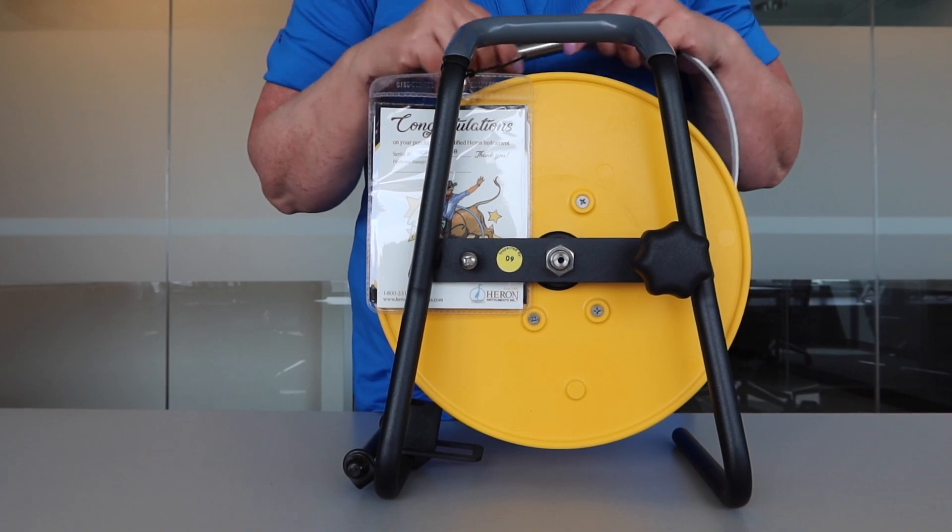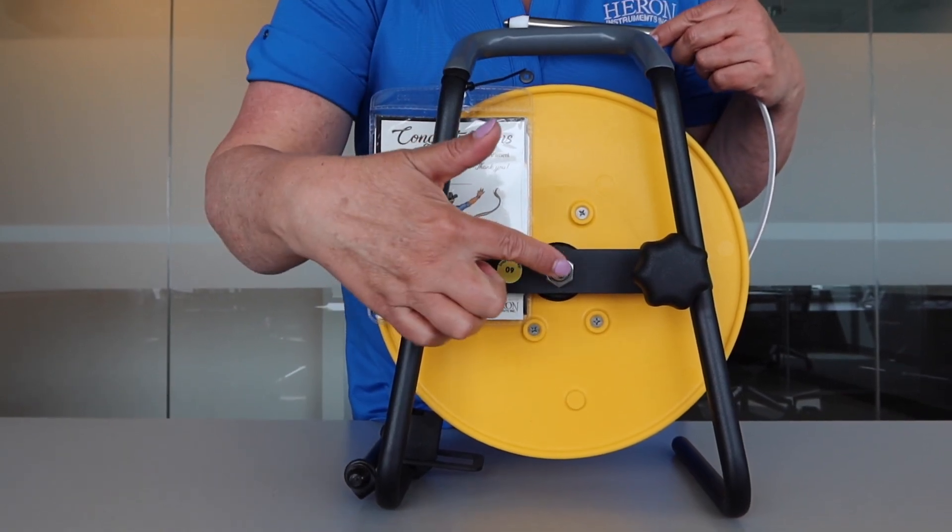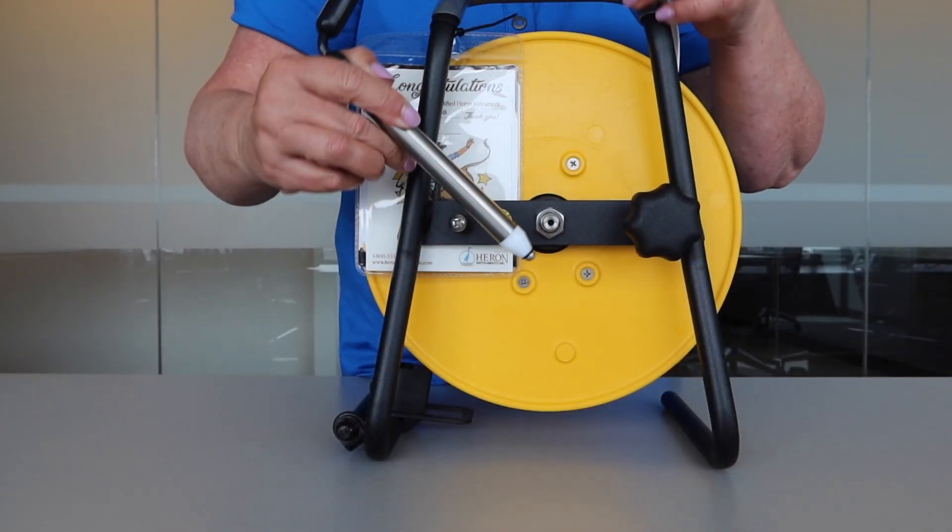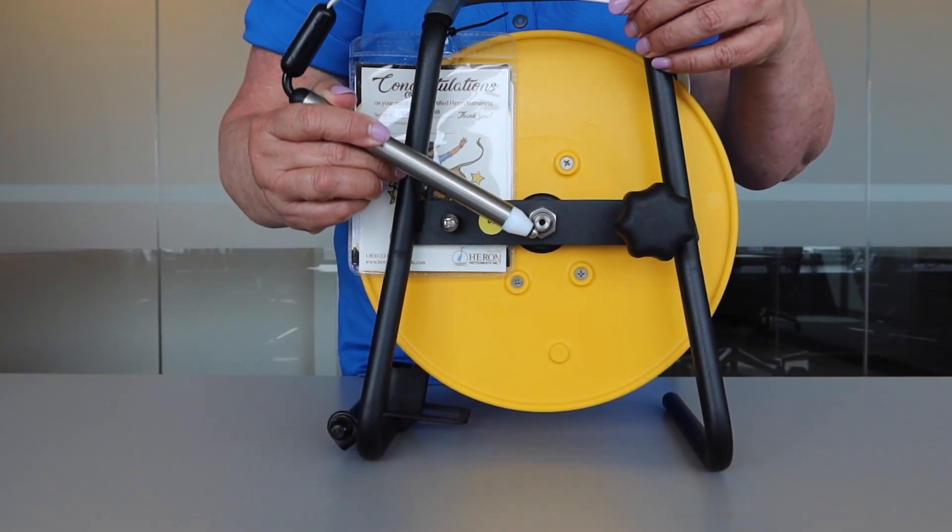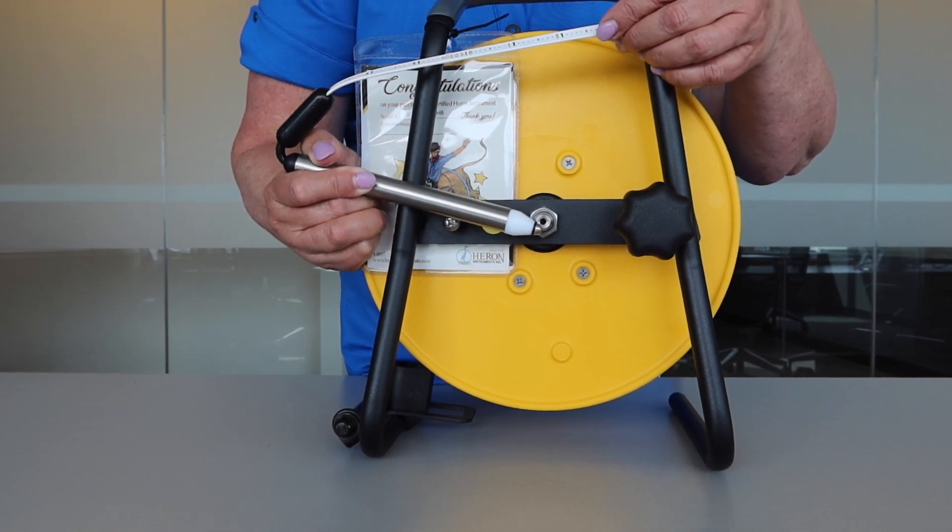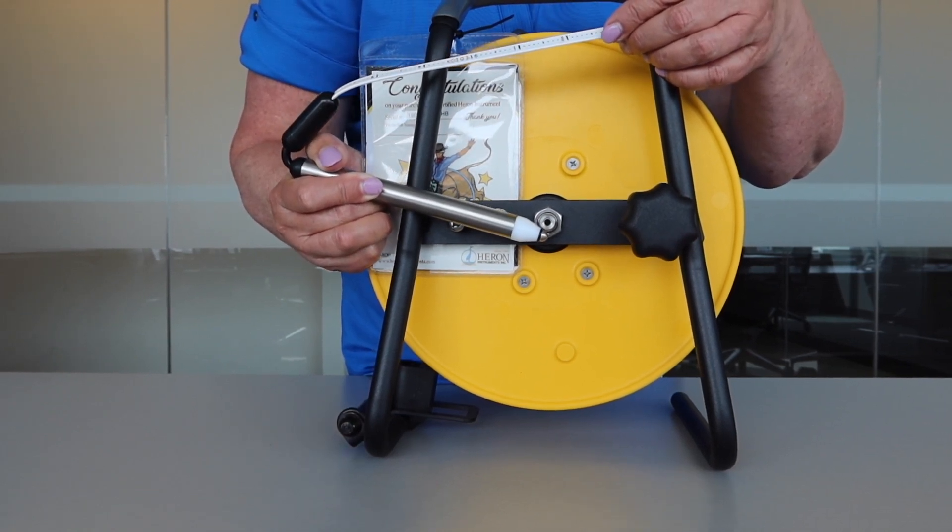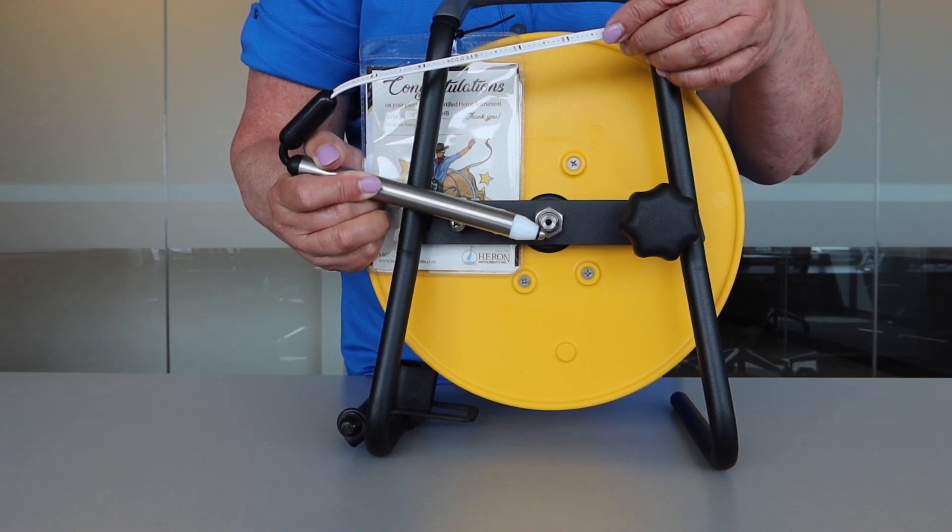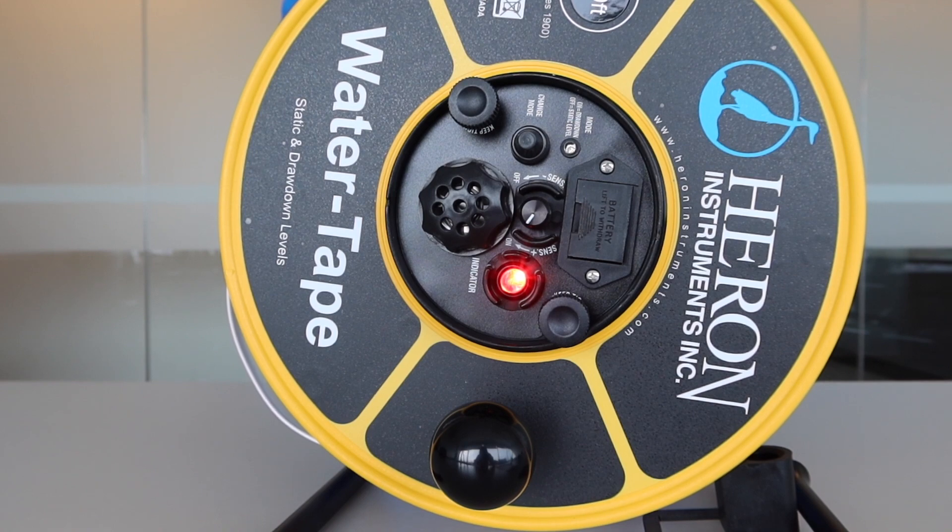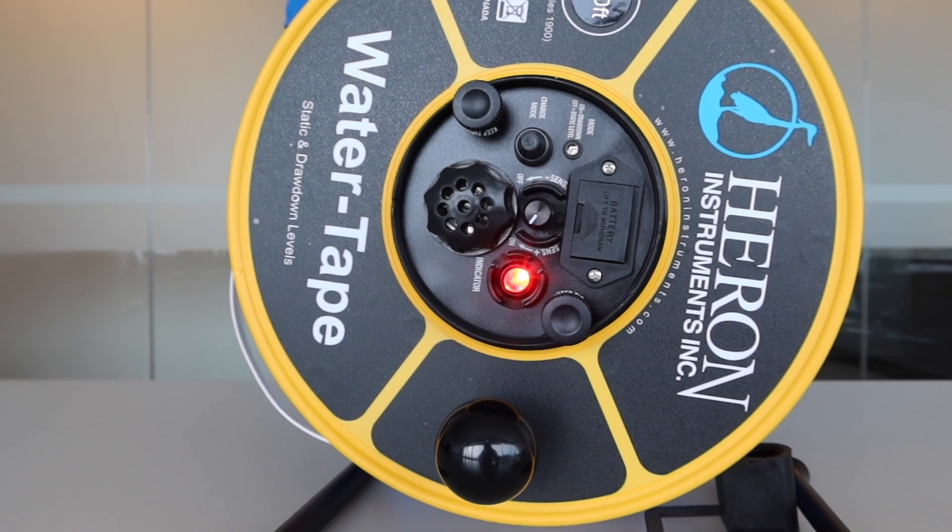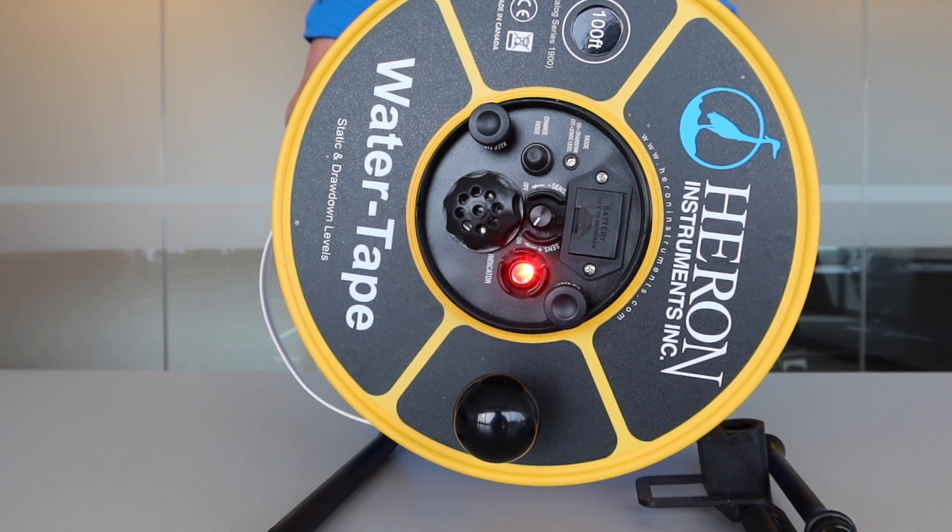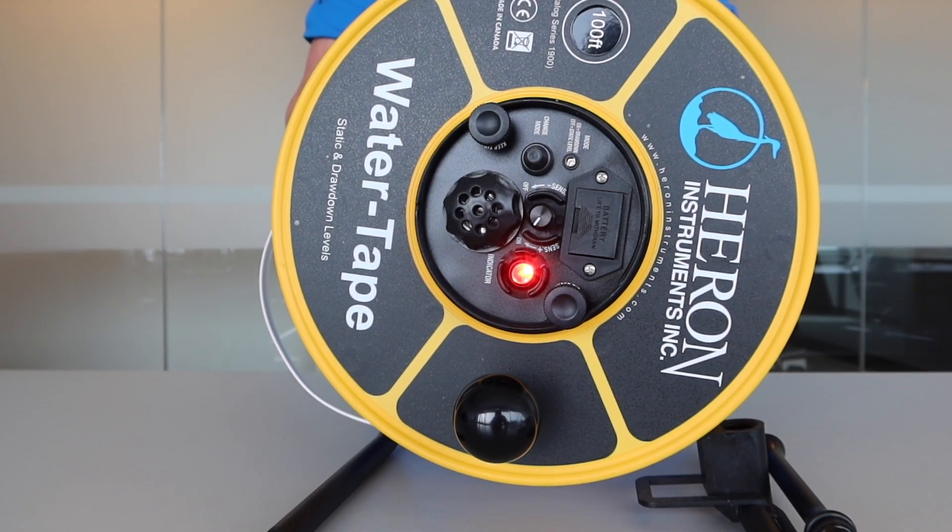You will also find the testing post. Before you go out in the field we suggest testing the unit to make sure everything is working properly, including the battery power level. Hold the probe to the center shaft and the body to the screw at the same time. This will complete the circuit, sending the signal from the probe up the tape to the electronic panel. The buzzer will sound and the LED lights will turn on. We suggest you always carry an extra 9 volt battery in your backpack just in case.